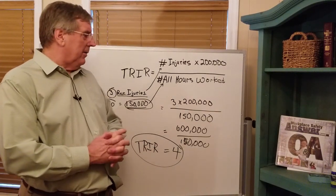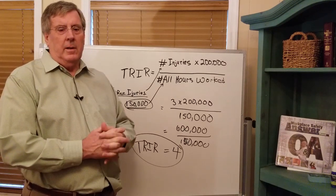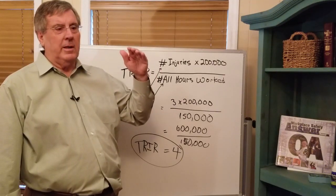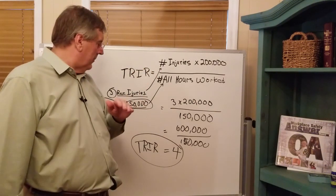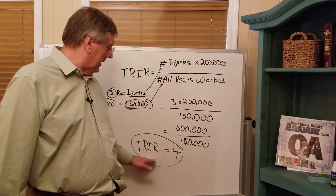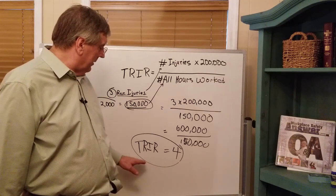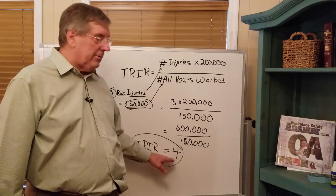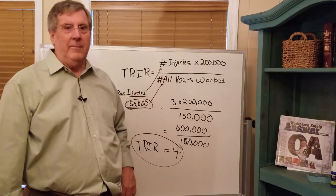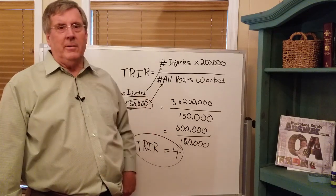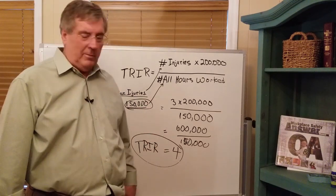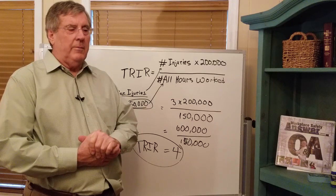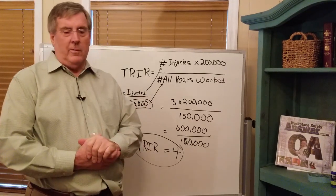Every year, the Department of Labor's Bureau of Labor Statistics publishes a list of North American Industrial Classification System (NAICS) codes, and for every one of those codes they publish the average TRIR. If you're below the industry average injury rate, you're doing great; if you're above average, you have room for improvement in your safety program.